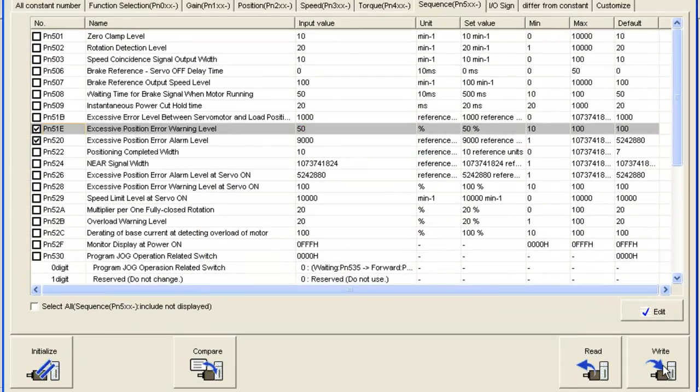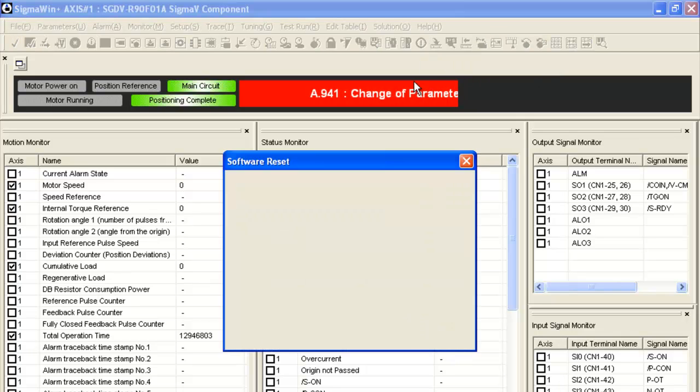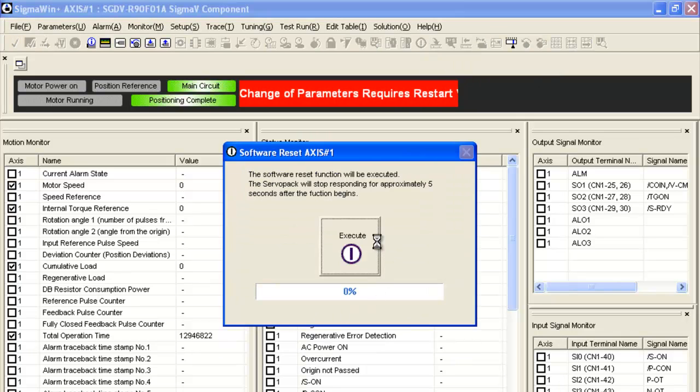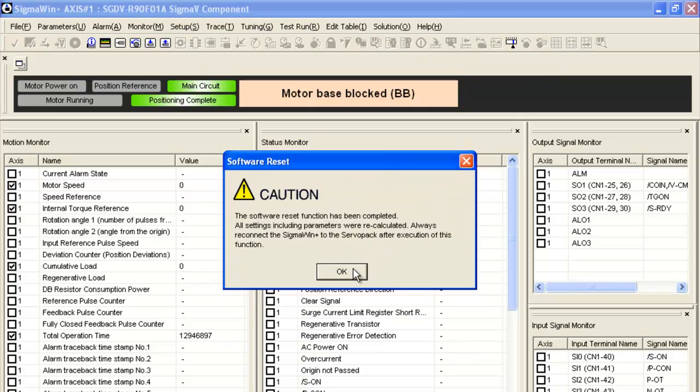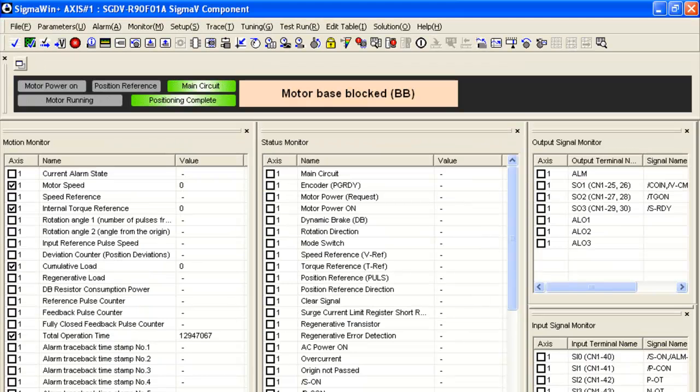And I'll write those over. Now I'm done with my parameters. I'll close it and cycle power. The best practice is to reconnect. So file reconnect. And then back into the software.